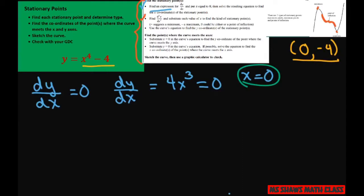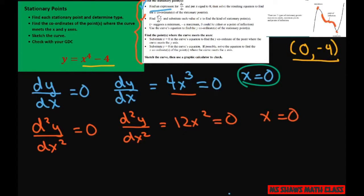So to find what kind of stationary point, the second derivative of y with respect to x, we set that to zero. So we look at that equation and the derivative of that equation is 12x squared. Set that to zero and we still get x equals zero. Since it is zero, zero could be either minimum, maximum, or point of inflection. So what you do is you look at this equation here to see what it is.